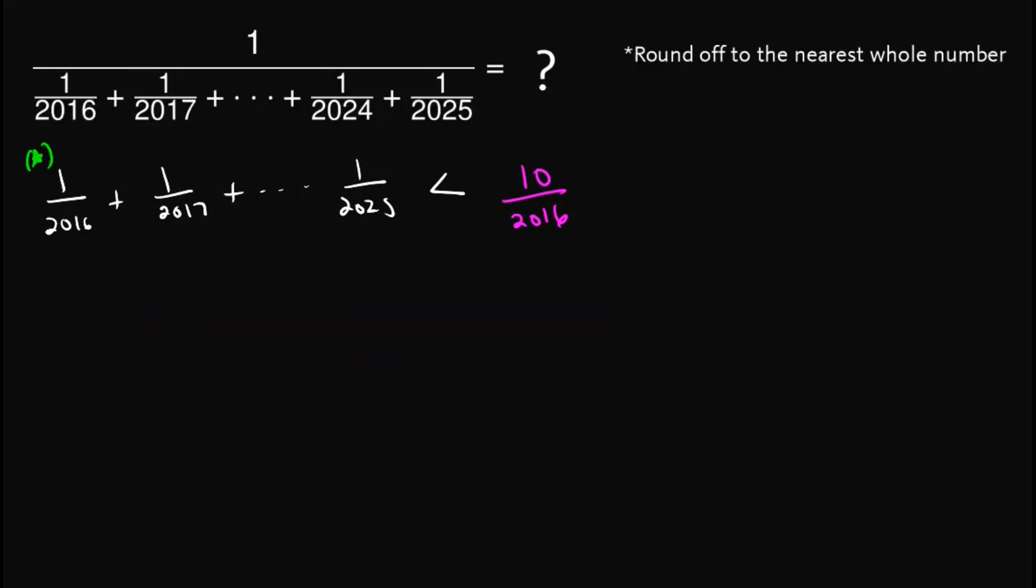Similarly, if we have M, for some integer M, less than 2025, then 1 over M is greater than 1 over 2025. For the proof or explanation of this, I will leave that as an exercise. We simply do the similar thing that I did in the first inequality. And so with this in mind, let's move this one.